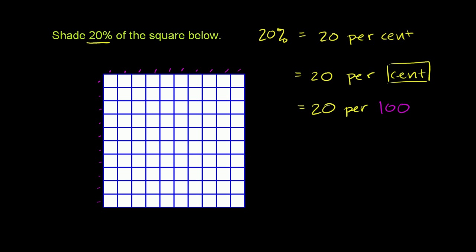So if we want to shade this, or another way to say it is that this larger square is broken up into 100 smaller squares. So it's already broken up into the 100. So if we want to shade 20% of that, we need to shade 20 of every 100 squares that it is broken into.